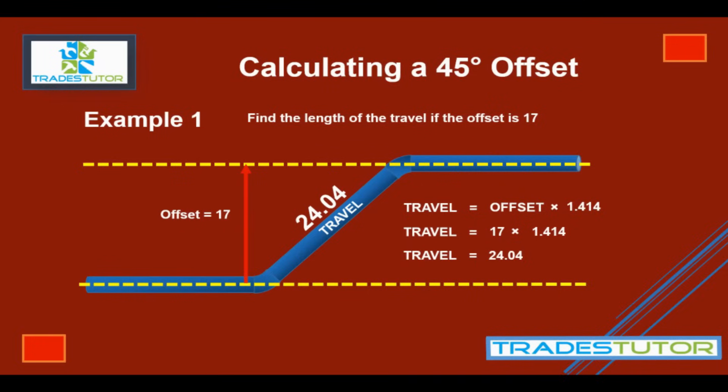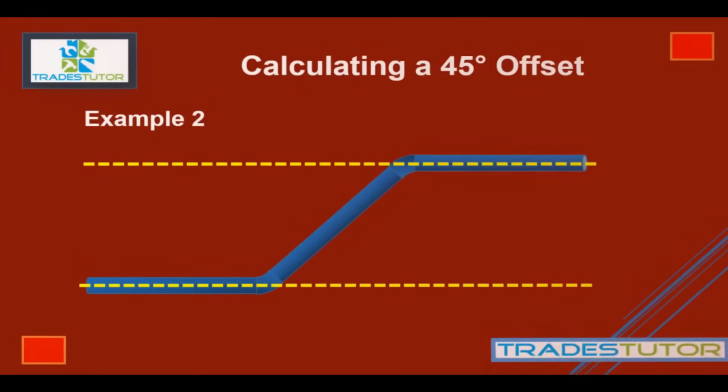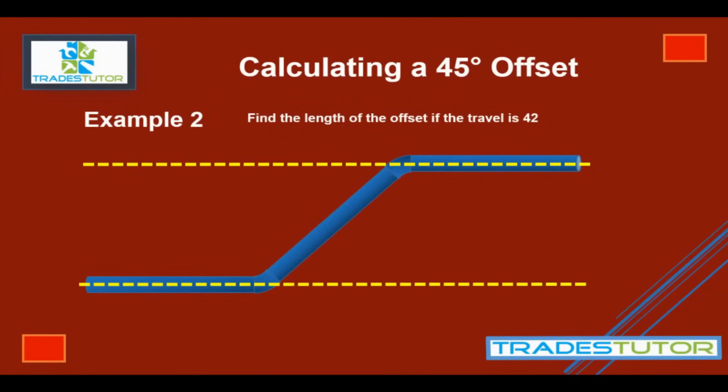Now you're saying, well, what if it's the reverse? What if we're trying to find the offset given the travel? Good question. Let's go to that. Find the length of the offset if the travel is 42. So now we have the travel and we've got to work backwards and find our offset. Well, it's the same formula, just we're going to reverse it a little bit. There's the original formula, but now we've got to change it to solve for the offset, which is equal to the travel divided by 1.414. That makes sense because the offset's going to be smaller. So we plug in our numbers, 42 divided by 1.414, and the offset, there you go, 29.7.